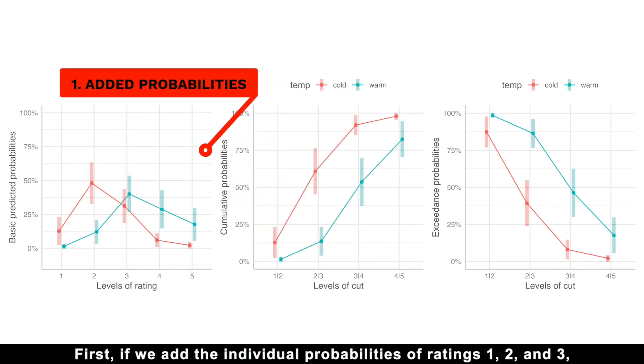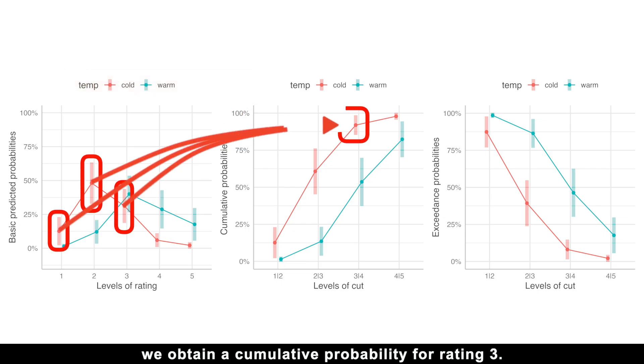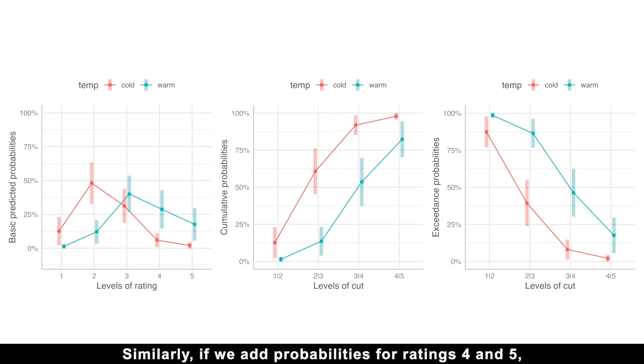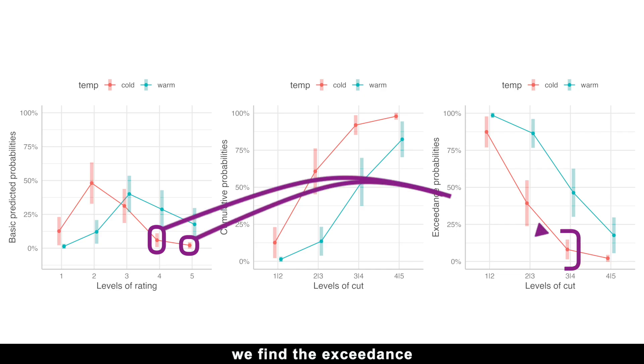First, if we add the individual probabilities of ratings 1, 2, and 3, we obtain a cumulative probability for rating 3. Similarly, if we add probabilities for ratings 4 and 5, we find the exceedance probability for rating 3. Yes, it's that simple.